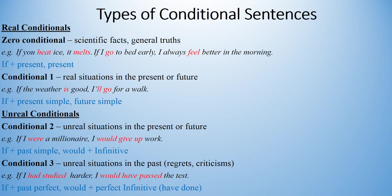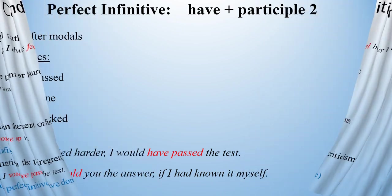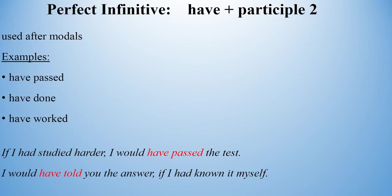Some of you may not know what the perfect infinitive is. Let me briefly explain this now. The perfect infinitive is a verb form made up of 'have' and the past participle of the main verb. For example, have passed, have done, have worked, and so on. It is mostly used after modal verbs to show that the action it expresses refers to the past.